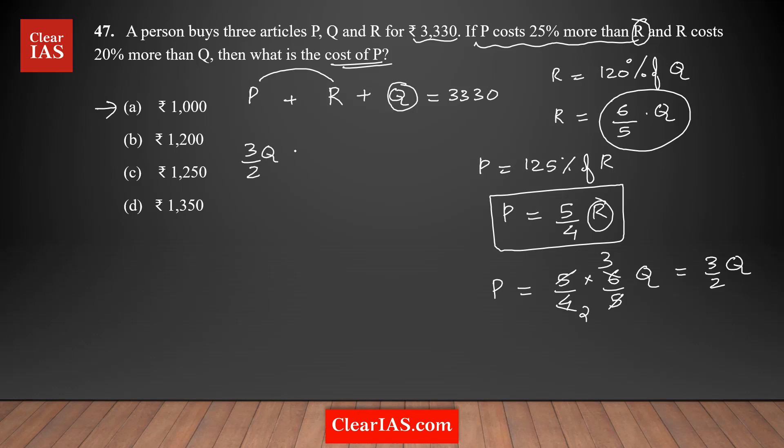Now all the terms can be written in terms of Q. Instead of P, replace it as 3/2 Q. Instead of R, replace it as 6/5 Q. Q is as is, which equals 3330. You have a single equation with one variable, so you can solve and find Q. Once you find Q, you can find P, which equals 3/2 Q.